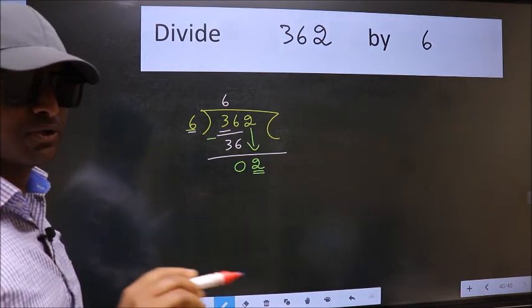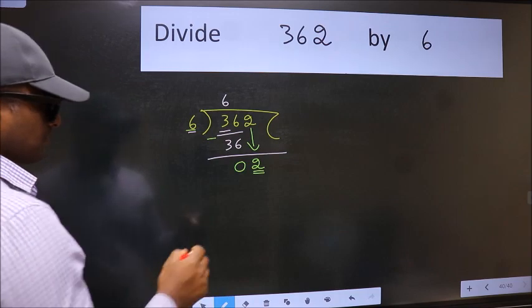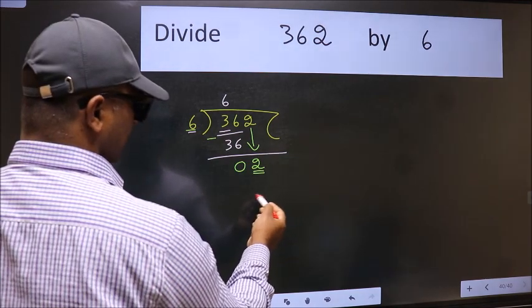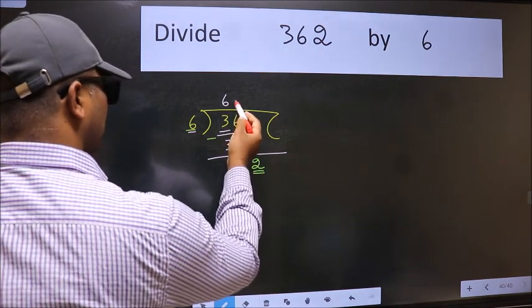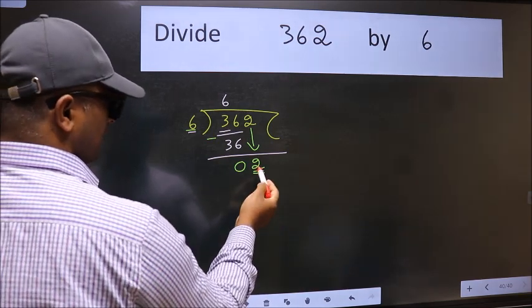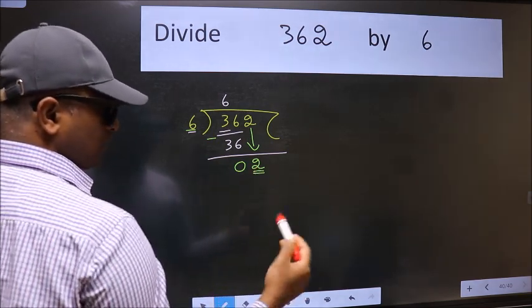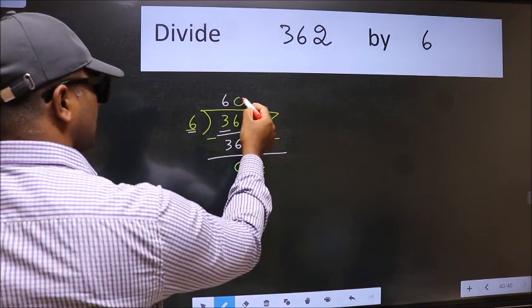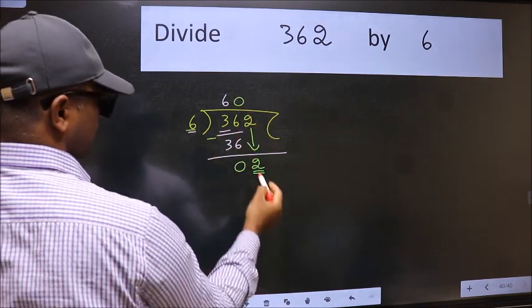Instead of that, what you should think of doing is, which number should we take here? If we take 1, we will get 6. But 6 is larger than 2. So, what we do is we take 0. So 6 into 0 is 0.